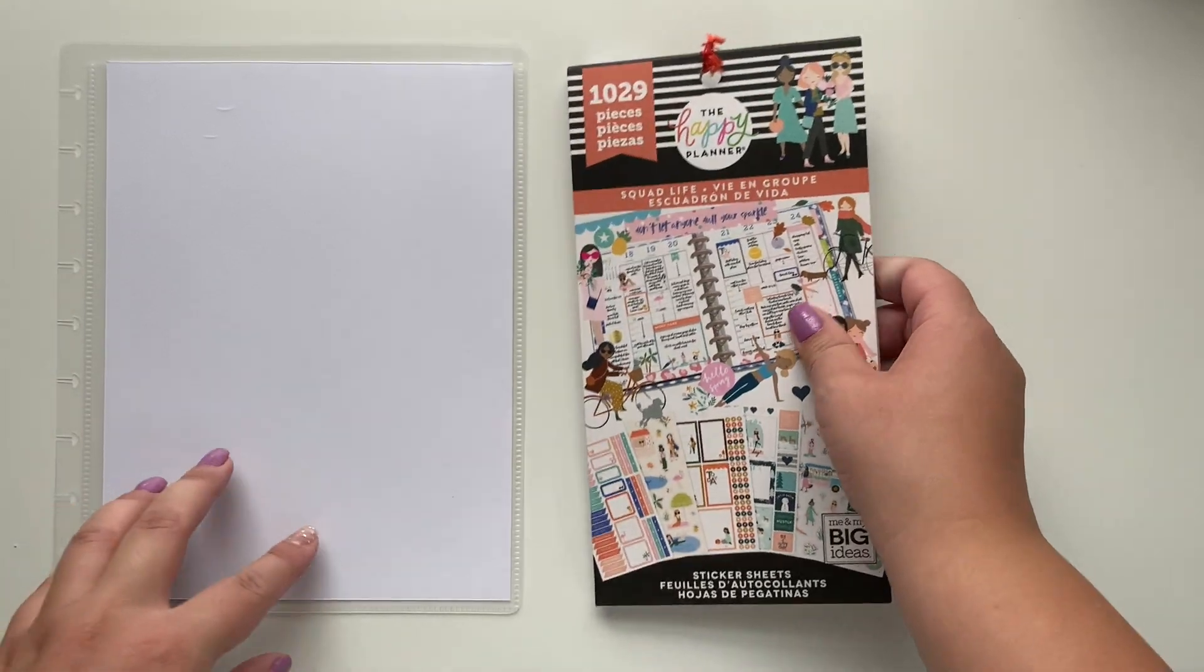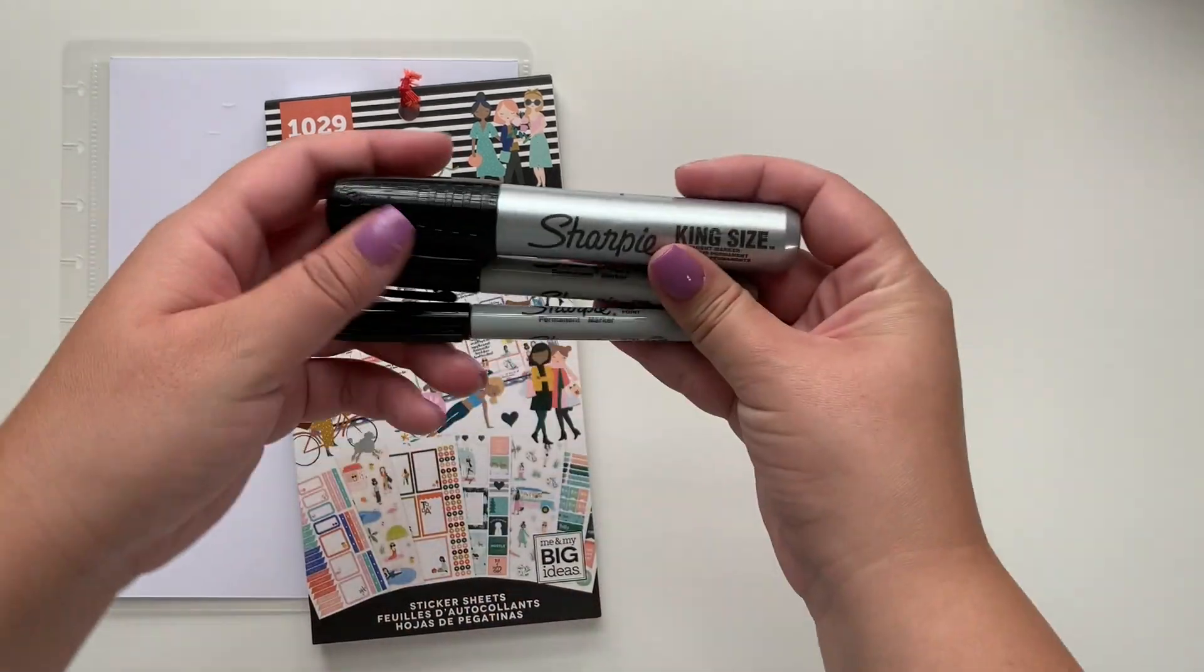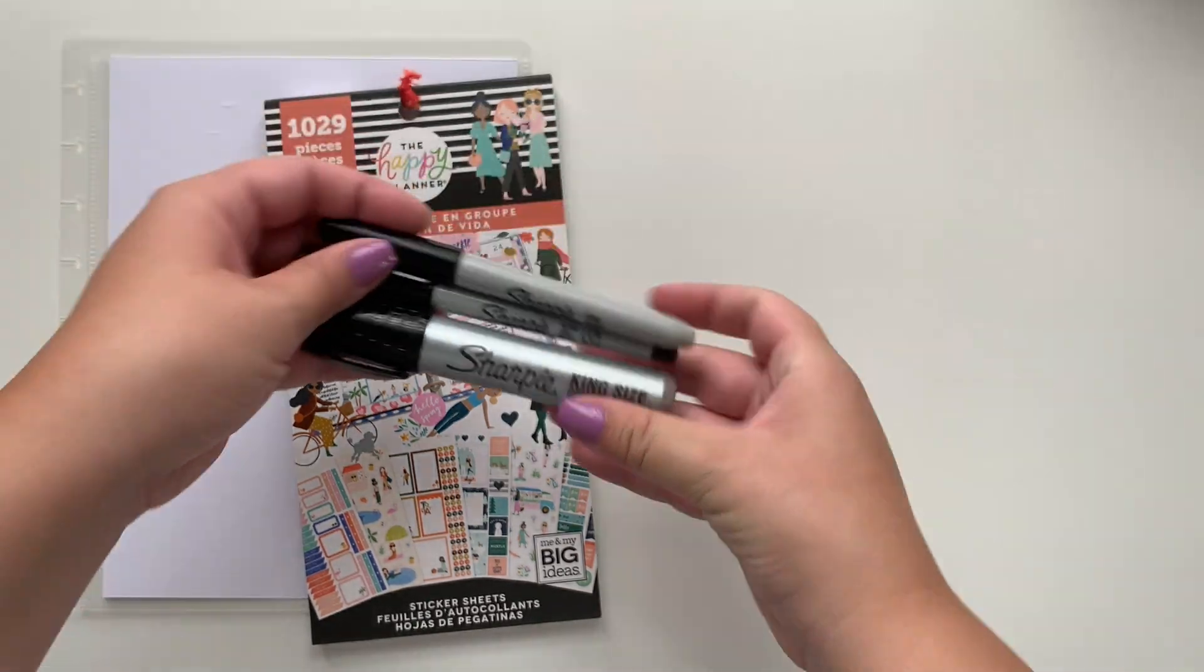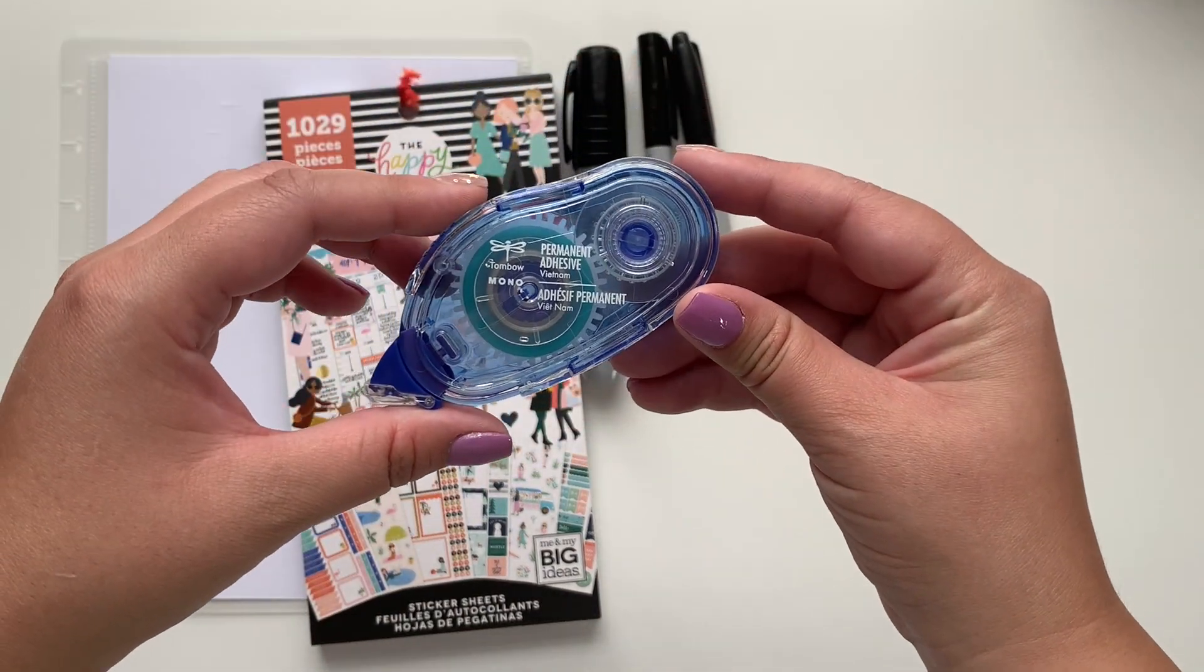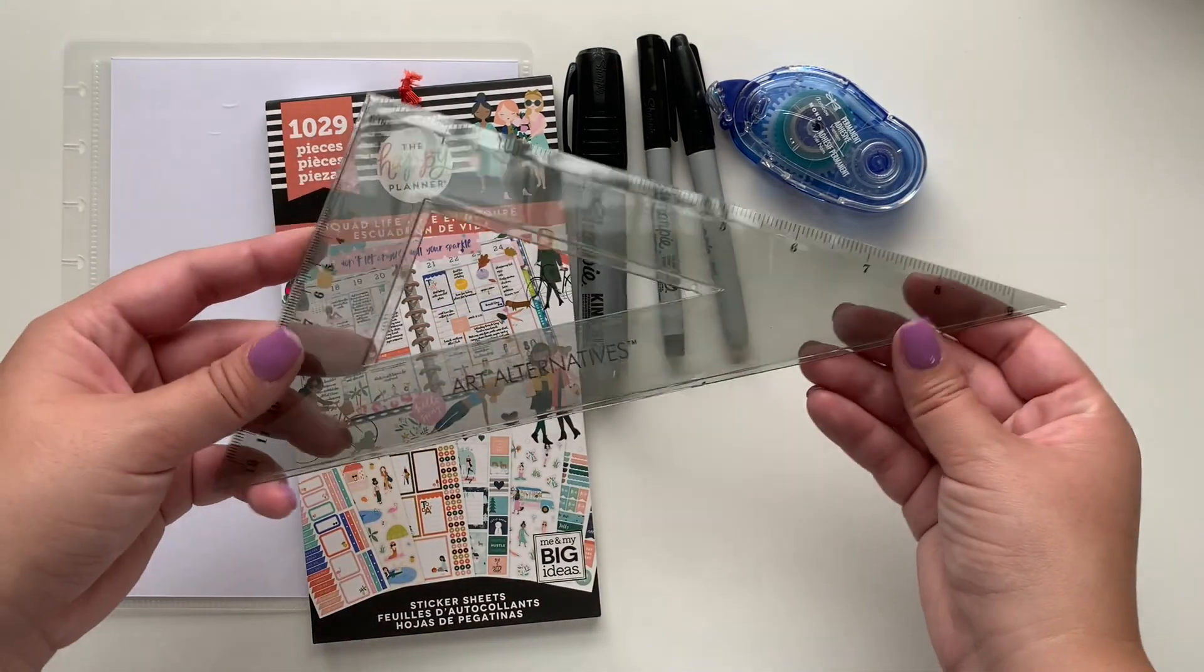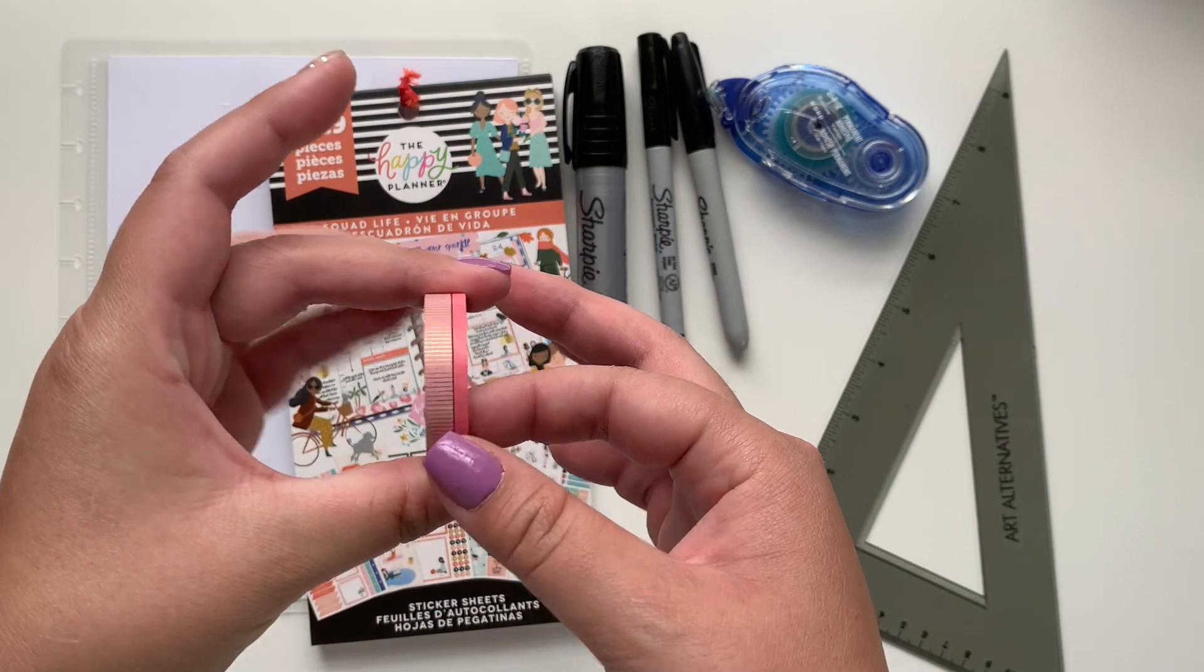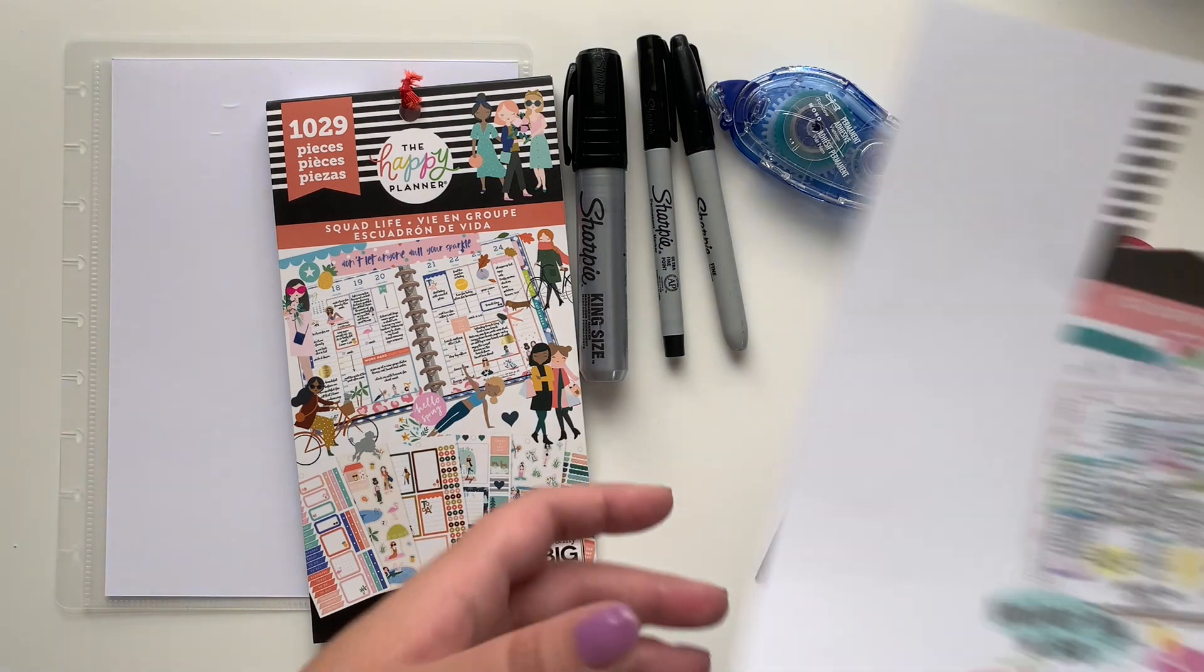Here I'm showing you everything I used: some Sharpies, king-size, fine point, and ultra-fine point Sharpies, all in black of course. I'm using a regular size sticker book as a reference, a Tombow permanent adhesive roller, and just a straight edge ruler, something that you could use like that. I have this one, and then your washi tape - you're going to need two sizes, a thicker one and a thinner one.